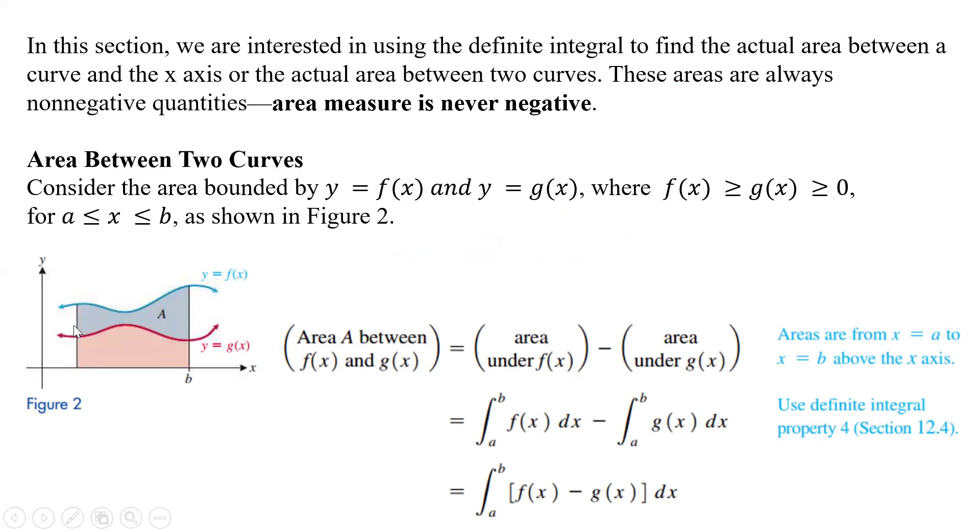We're going to look at this curve f(x) and this curve g(x), looking for that positive area here. For area between curves, consider the area bounded by f(x) and g(x), where f(x) is greater than or equal to g(x), which is greater than or equal to zero, for a ≤ x ≤ b.